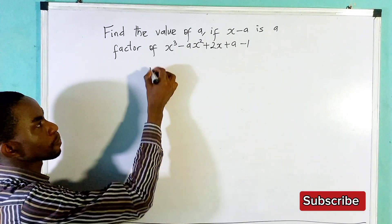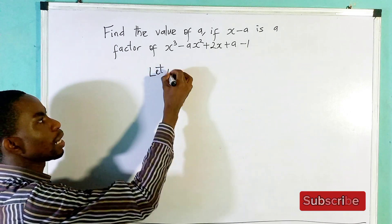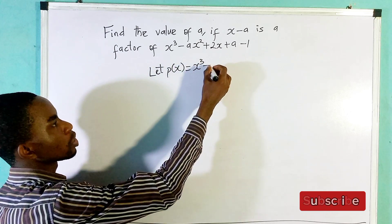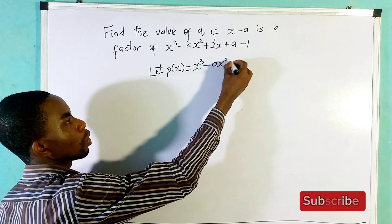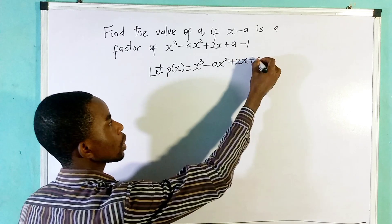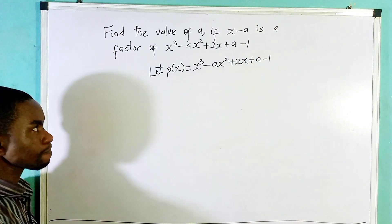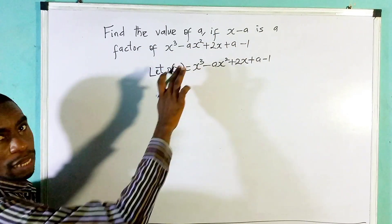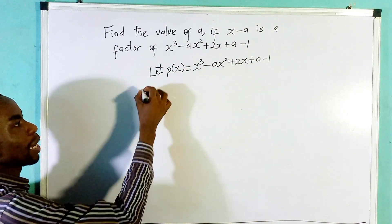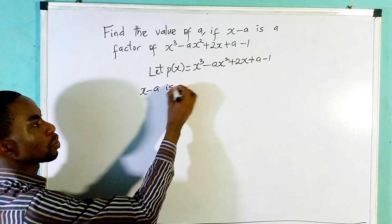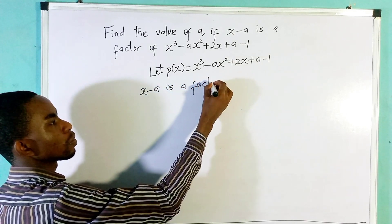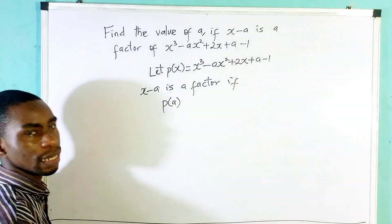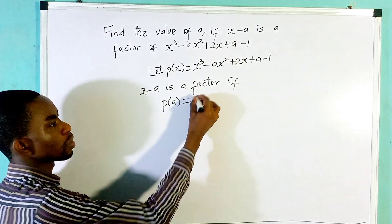Let P of x be equal to this polynomial: x cubed minus a squared plus 2x plus a minus 1. Now, we said x minus a is a factor. So, x minus a is a factor if P of a — that means when you replace x with a — equals 0.